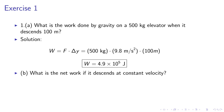Why does the network equal zero if it descends at constant velocity? We have sigma f equals to 0, so the network done is equal to 0.